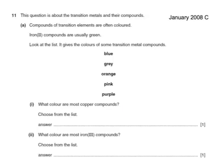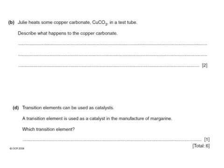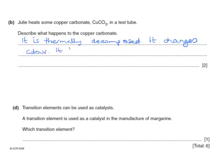A couple more questions. Compounds of transition elements are often colored. Iron(II) are usually green. What color are most copper compounds? That one would be blue. And what color are most iron(III)? That would be orange. Julie heats some copper carbonate, CuCO3, in the test tube. Describe what happens to the copper carbonate. It is thermally decomposed. It changes color. It turns into copper oxide and carbon dioxide.